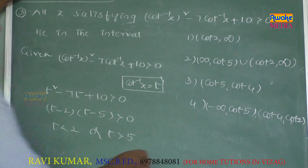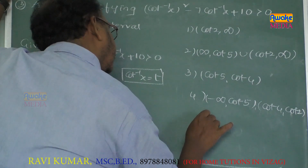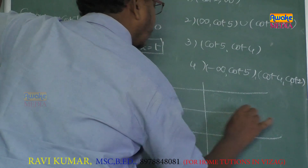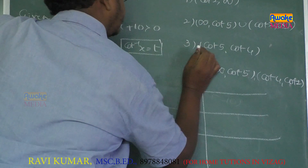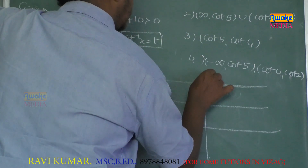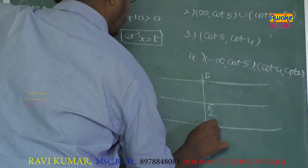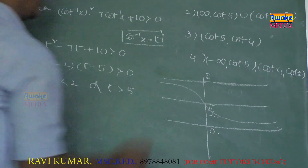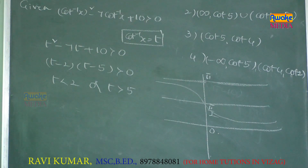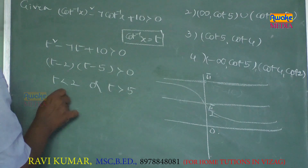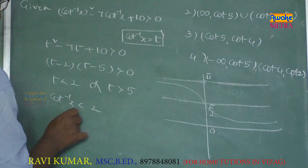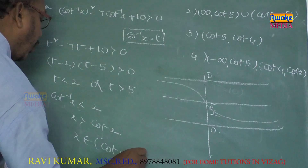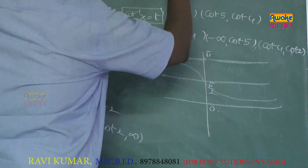Looking at the graph of cot⁻¹(x): since cot is a decreasing function, cot⁻¹(x) < 2 implies x > cot 2. So x belongs to (cot 2, +∞). The first option is the answer.